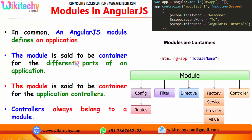The module is said to be the container for the different parts of an application and for the application controllers. The controller belongs to a module by default. So a module will have configurations, filters, directives, factory, service, provider, value, and finally controller.